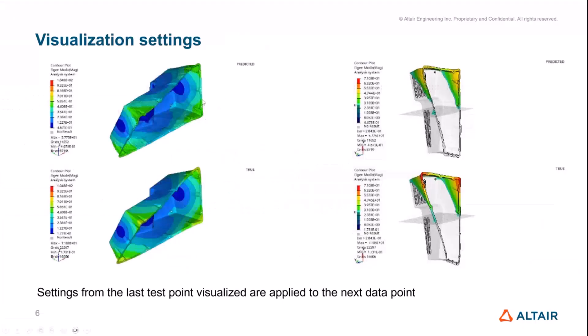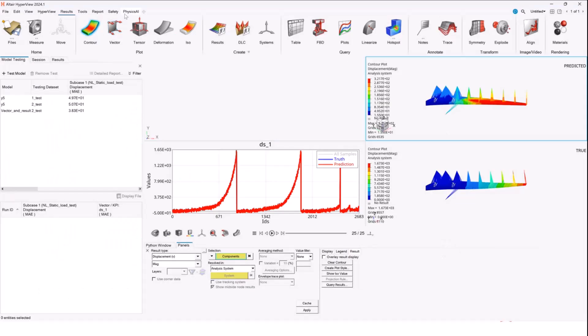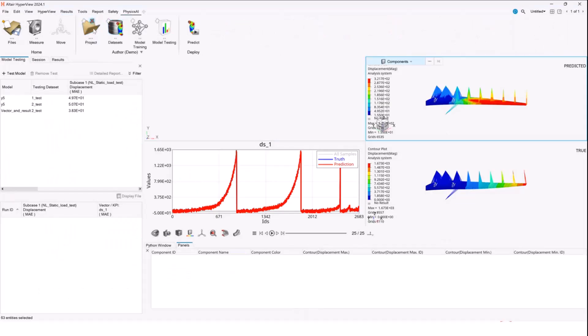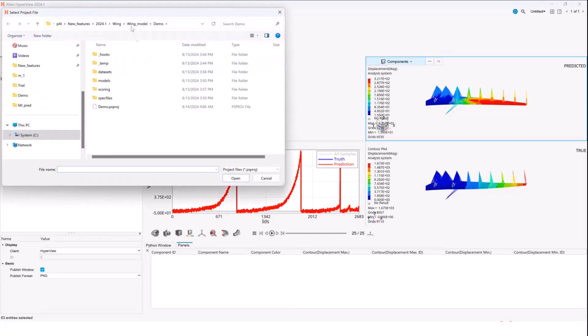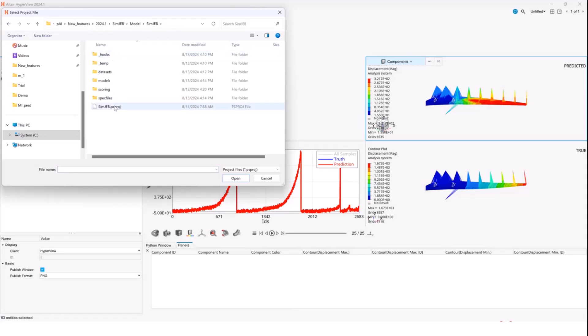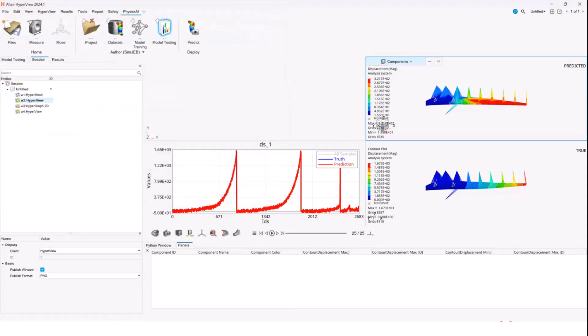The next item is visualization settings. We now enable the storage of the visualization settings from the last data point, and for subsequent data points which are opened up, those settings remain. To demo this, I'm going to switch to HyperMesh. I'm going to open a model here and go to model testing.